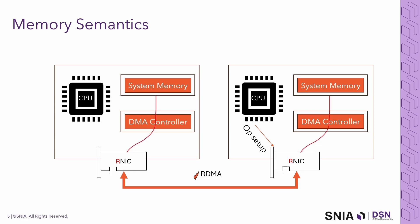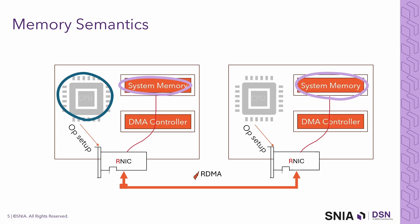Before copying some data from one server to another, the CPU performs some operations. It sets up the operation in the RNIC, lets the RNIC know where the memory is locally, where the memory is remotely, and what operation it wants to perform — such as a read or a write. Once this operation is configured, the RNIC can access the memory directly, packetize it, and send it over the wire to the remote setup. All this is done without CPU involvement.